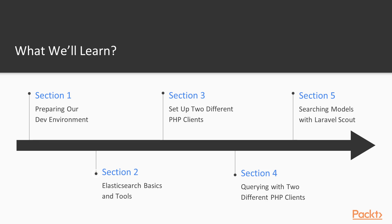In the next section, we'll move on and take a look at Elasticsearch basics and tools. We'll dig into Elasticsearch before we start writing any PHP code. We'll take a look at Elasticsearch under the hood and figure out how it works. We'll start out by learning some basic concepts: how data is structured and stored in Elasticsearch, how to insert data, how to query and get data back, how to get status information on our Elasticsearch server, and how to interpret the results we get back from the Elasticsearch API.